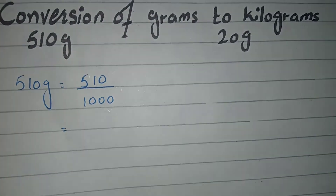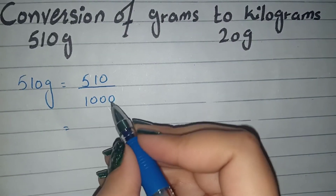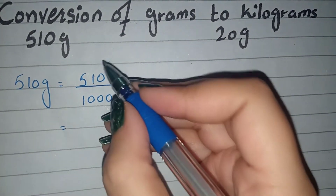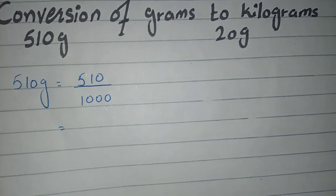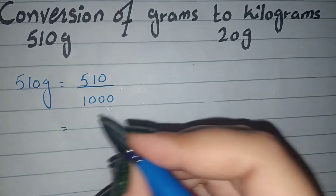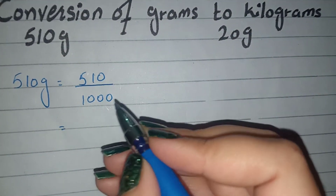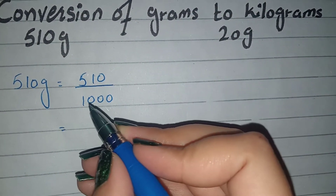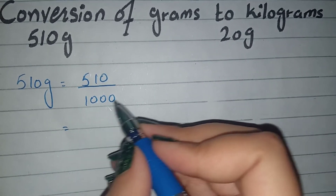When we place the decimal, we have to divide. Because the denominator is 1000, it has 3 zeros, which means we move 3 decimal places.